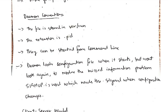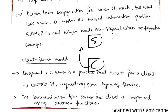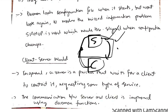In the client-server model, the server is one system and the client is another. The client requests some function, the server performs it and returns the result. This process can be done in a more efficient and improved manner using daemon functions.